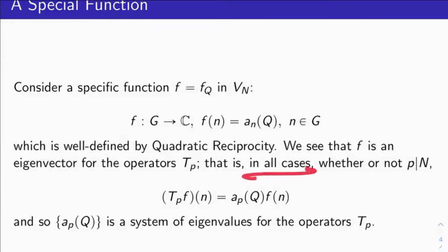More specifically, in all cases, whether or not the prime p divides N, you can check that T_p(f) evaluated at n for n in G is nothing but a_p(Q) times f(n). And so you can see here, f is an eigenvector for the T_p operators. And we can see that the a_p(Q)s here, they form the system of eigenvalues for the operators T_p.